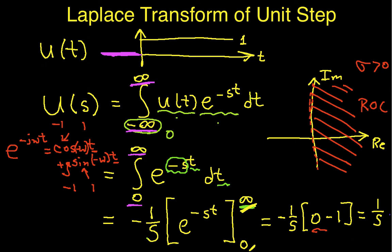This essentially concludes the Laplace transform of the unit step function. There's one last thing to make this complete: in the next video, I'll look at an inverted unit step function, where the region of convergence is on the other side, just to show that you can get the same 1 over s but with a different region of convergence.